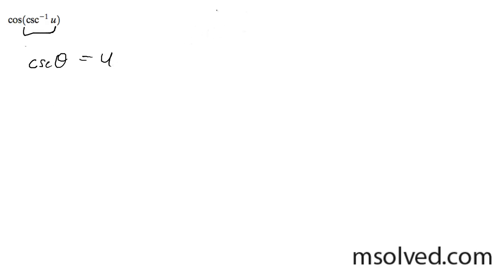As long as I know my bounds for this are going to be between negative pi over 2 and pi over 2, I can actually rewrite this as 1 over the sine of theta is equal to u, or the sine of theta is equal to 1 over u.